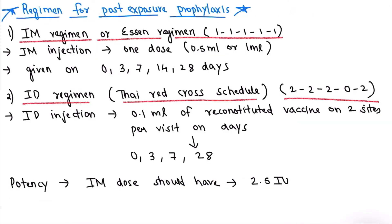Now coming to the regimen for post-exposure prophylaxis. There are two types. The first is the IM regimen, also called the Essen regimen. The injection is intramuscular — one dose of 0.5 ml or 1 ml given on days 0, 3, 7, 14, and 28. That is why it is written as 1-1-1-1-1.